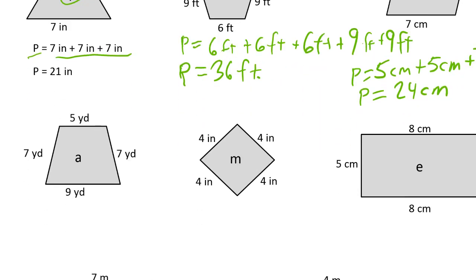For shape A we have two sevens, a five, and a nine. P equals 7 yards plus 7 yards plus 5 yards plus 9 yards. Two sevens is 14 and nine plus five is also 14. So two 14s is 28 yards.